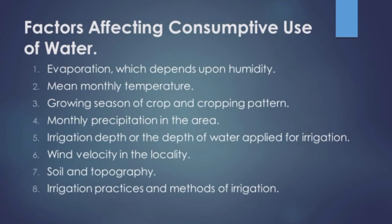The growing season of the crop and cropping pattern affect transpiration — depending on the season and crop type, transpiration will increase or decrease. The fourth factor is monthly precipitation in the area, which affects the irrigation pattern; as precipitation increases, both transpiration and evaporation will increase.